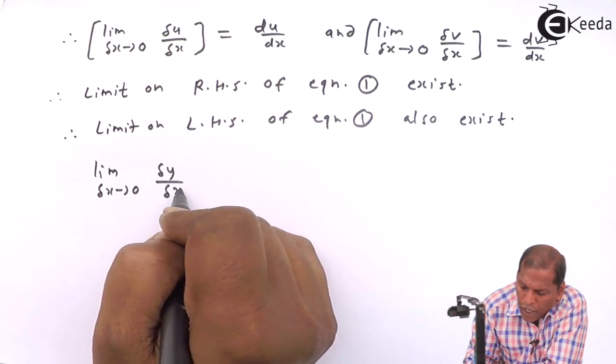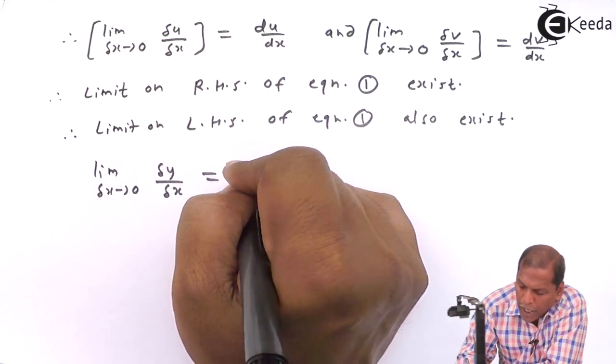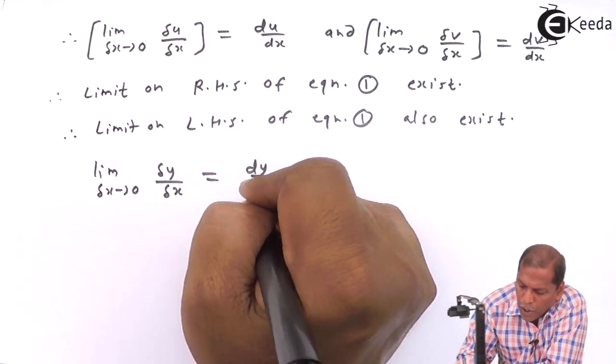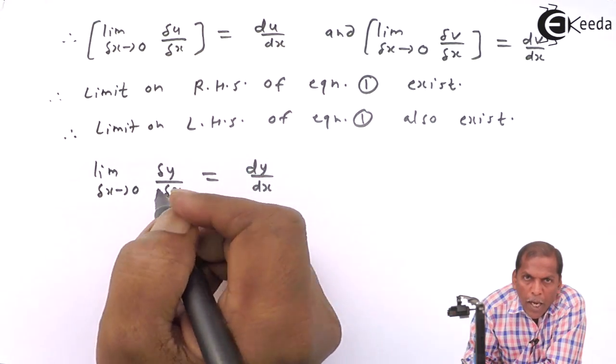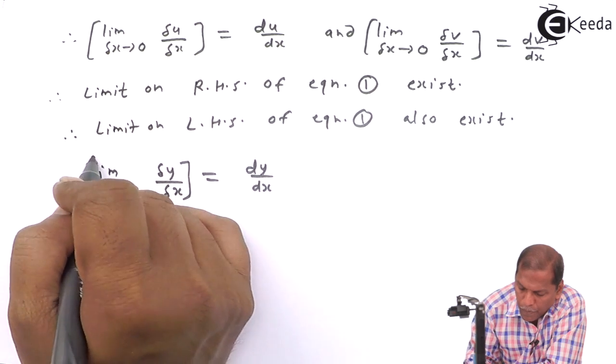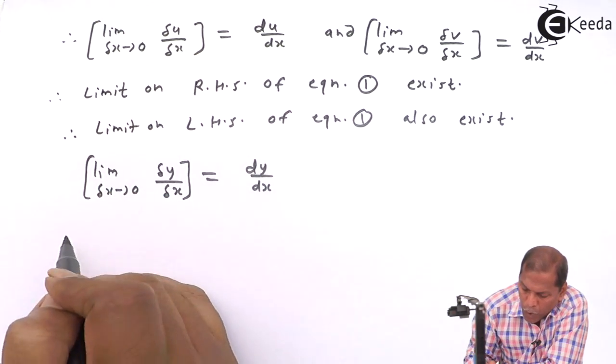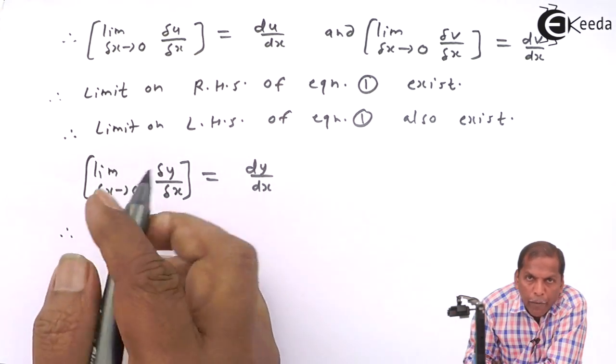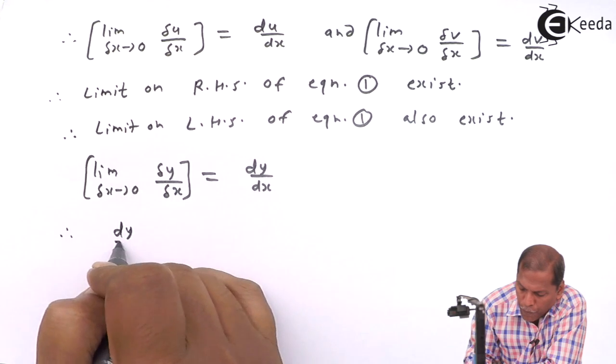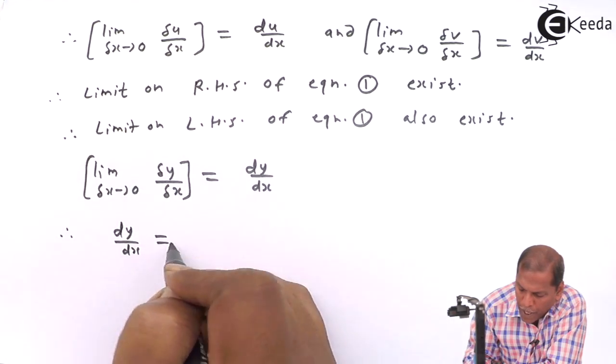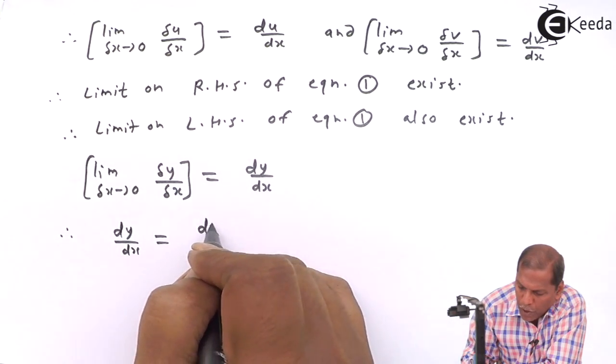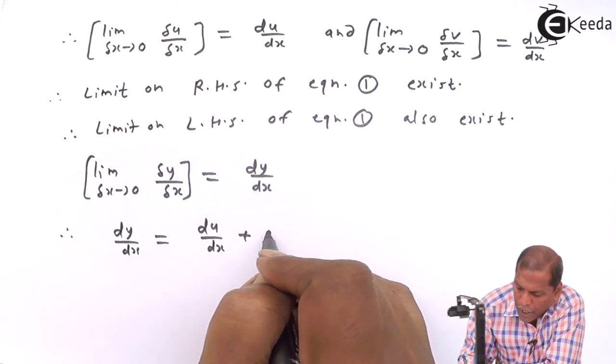lim(Δx→0) Δy/Δx = dy/dx. The limit on the right-hand side of equation 1 also equals dv/dx.